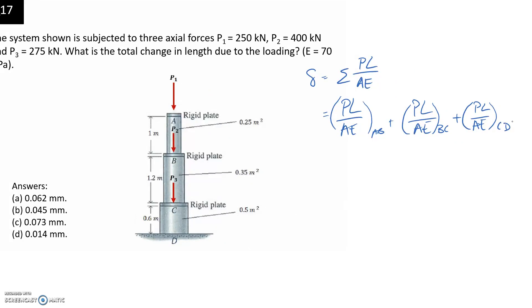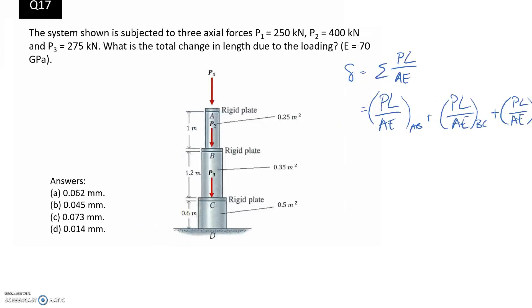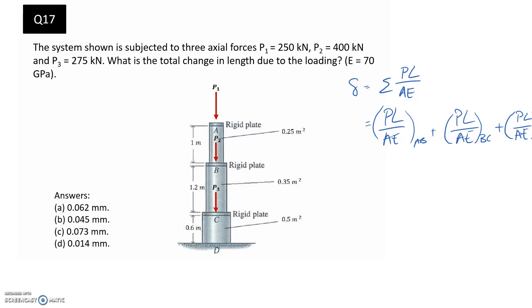We need to find the axial load P, the length L, the area A, and Young's modulus E for each of our sections. Let's start by drawing a free body diagram and taking cuts through each of our sections to find the internal loads P in each case.